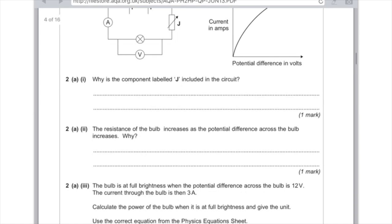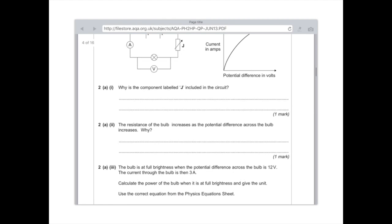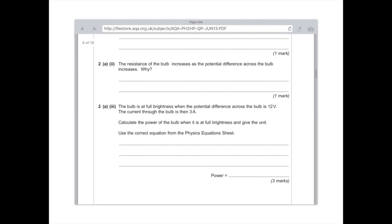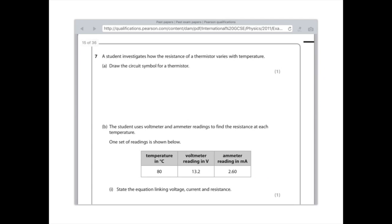That's because the temperature of the bulb has increased. Part three: the bulb is at full brightness when the potential difference across the bulb is 12 volts. The current through the bulb is then 3 amps. Calculate the power of the bulb when it is at full brightness and give the unit. For the people who don't get given the equations, we're looking for power, which is current times voltage (P = IV). So the current is 3 amps times the voltage which is 12 volts, which gives 36.